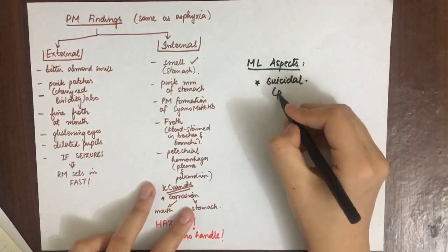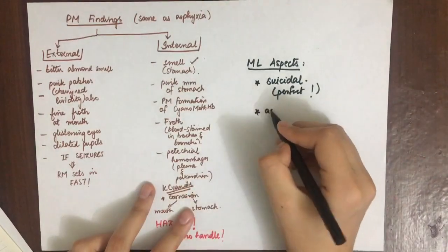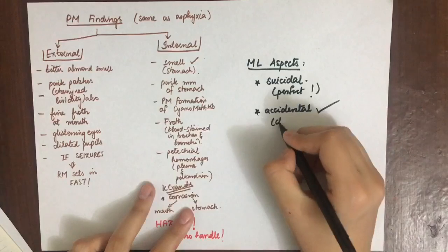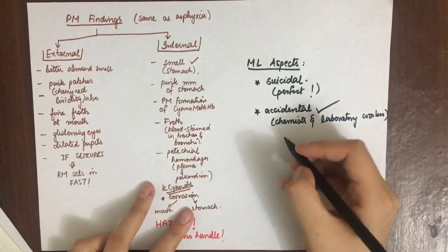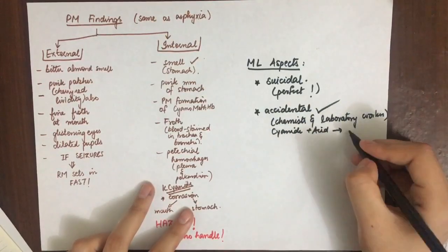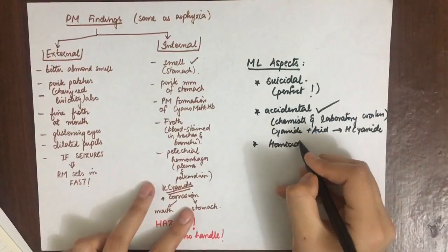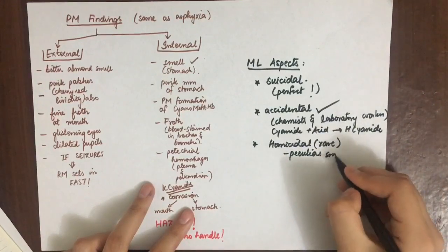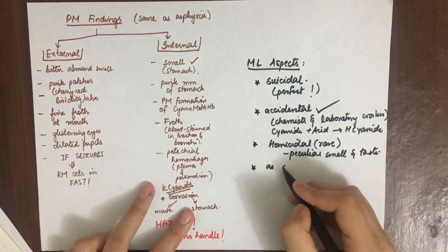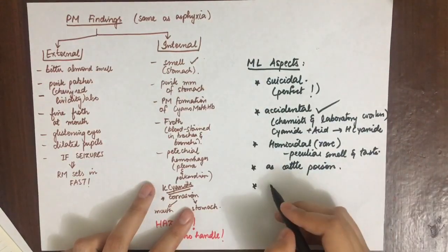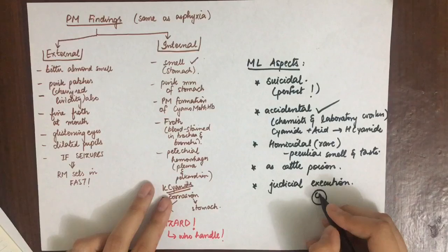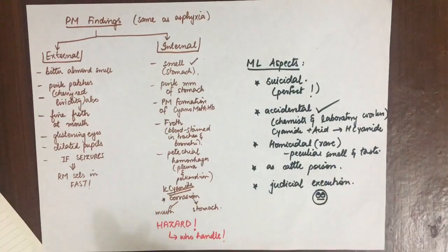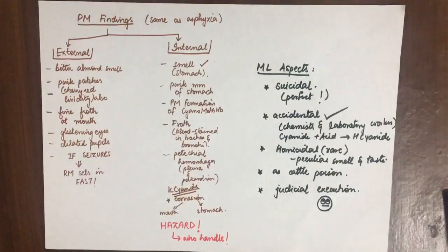Finally, the medical legal aspects of cyanide poisoning: it can be used for suicidal purposes - it is the perfect poison for suicide. Accidents can happen to chemists and laboratory personnel who are exposed when they pour cyanide solutions into sinks containing strong acid residue. Homicidal cases are rare because of the peculiar smell and taste. It has been used as cattle poison, and in some countries it is used in judicial execution. That's all about cyanide poisoning.